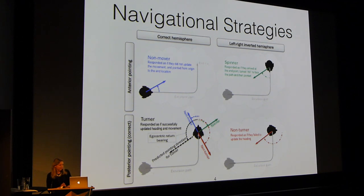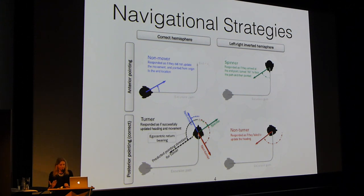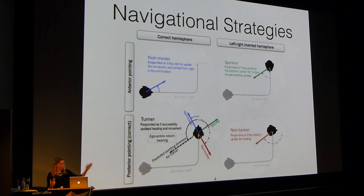For spatial navigation, here are four proposed strategies that we've come up with, as well as others, that people might use. On the top left, we have non-movers. This happens when we take a path and make a turn to the left or right, and then ask participants where did you start from — can you point to that starting location? What non-movers do is they seem to respond as if they did not update their movement, and they point from the origin to the end location. It seems as if they didn't go through the path — they kind of just watched or imagined themselves going through the path but didn't point correctly.